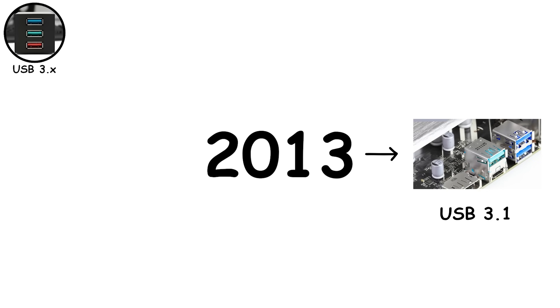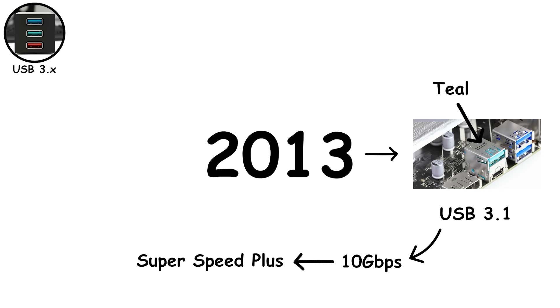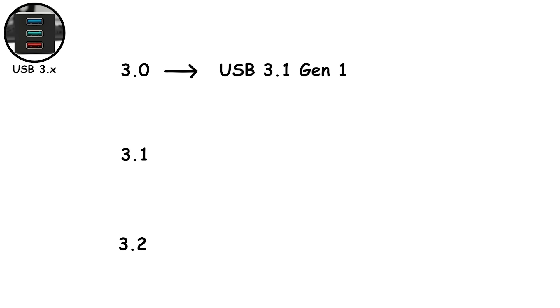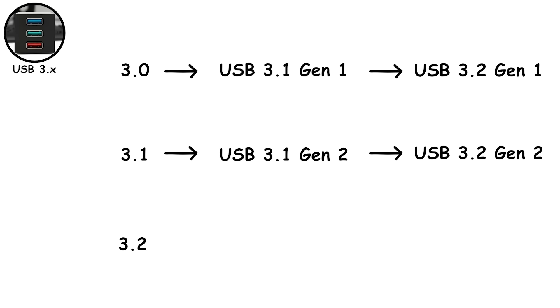Then in 2013, USB 3.1 arrived, doubling the speed to 10 gigabits per second and sometimes coming in a teal-colored port. It was also called SuperSpeed Plus. But then the USB-IF — the organization in charge of naming these things — decided to make everyone suffer. Instead of simply calling the updates 3.0, 3.1, and 3.2, they renamed everything multiple times: USB 3.0 became USB 3.1 Gen 1, then USB 3.2 Gen 1. USB 3.1 became USB 3.1 Gen 2, then USB 3.2 Gen 2. And USB 3.2, the newest one, became USB 3.2 Gen 2x2, going up to 20 gigabits per second. Yes — the same ports, same shape, same connector, but each one somehow ended up with two or three names.